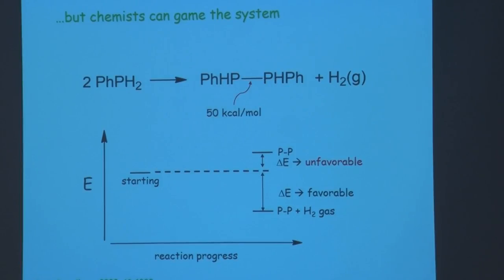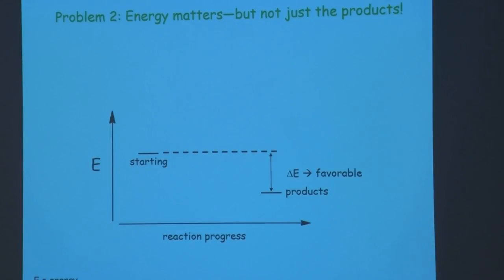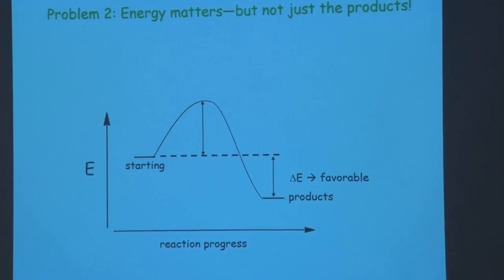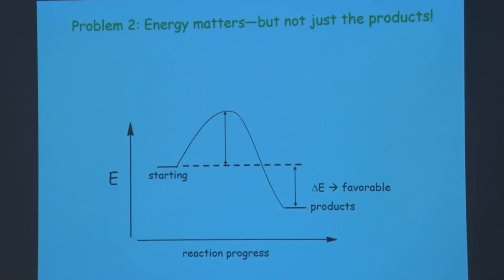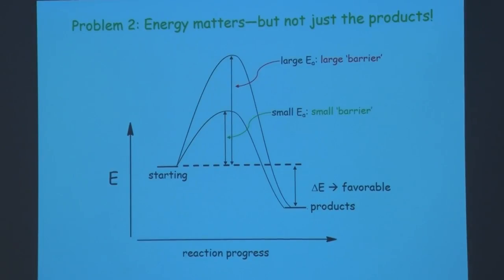The second problem is still energy-related: it's not just the products that matter, but the energetic pathway to get there. There's an activation energy — an initial barrier — that must be surmounted, and there's no guarantee of how large it is. Very large energy barriers are unfavorable; small energy barriers mean faster reactions. We have less control over this than we do over the product energy side.